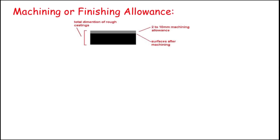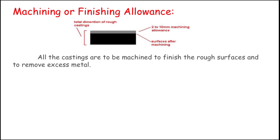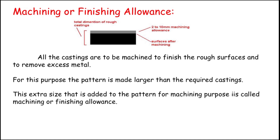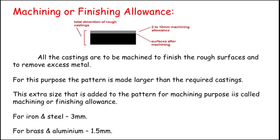The next one is machining allowance or finishing allowance. All castings need to be machined to finish the rough surface and remove excess material. We get the casting in a rough condition, so we finish it by removing metal using a machine to get a smooth surface. In the final casting, we also get runners and gates on the casting material, which have to be removed by machining. For this purpose, the pattern is made larger than the required casting. For iron and steel, we use 3 mm machining allowance; for brass and aluminium, we use 1.5 mm machining allowance.